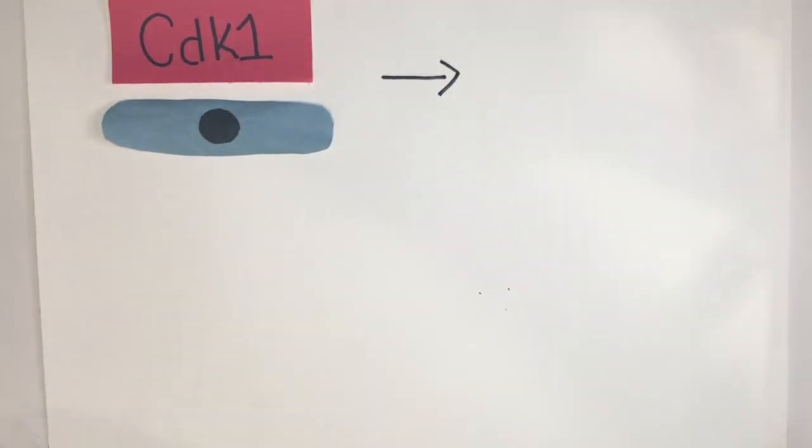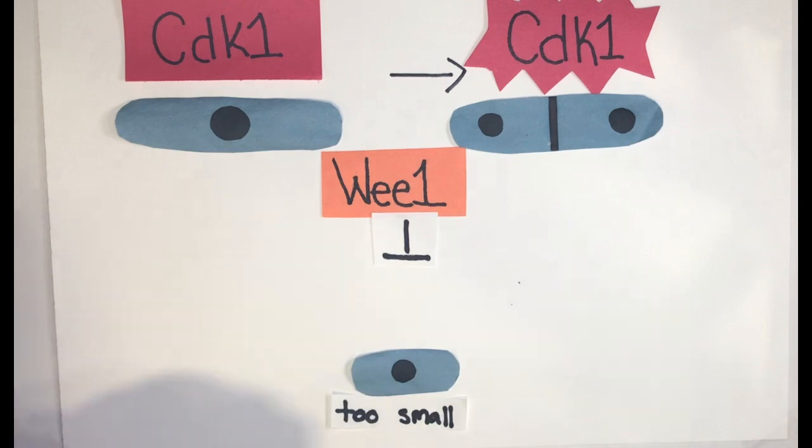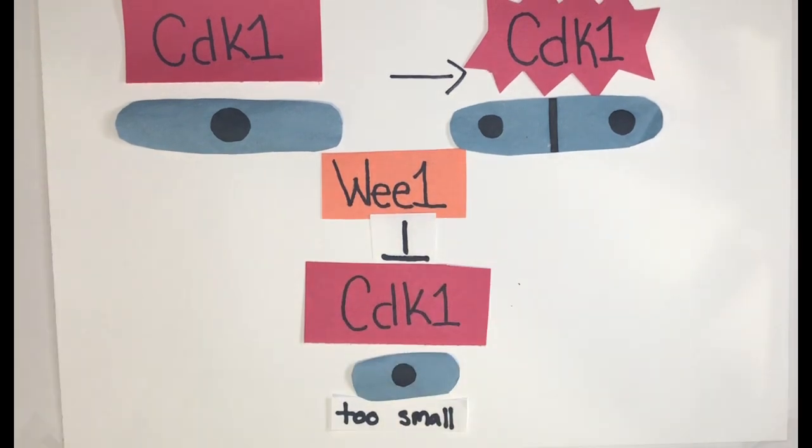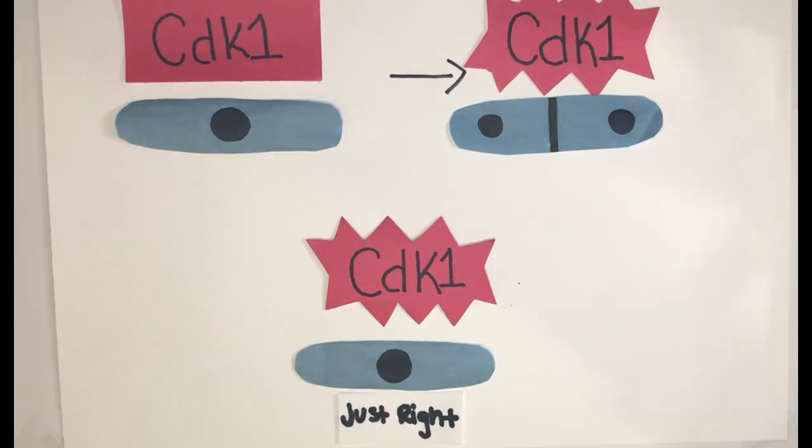The key molecular event that triggers mitotic entry is activation of the cyclin-dependent kinase CDK1. In small cells, CDK1 is inhibited by another protein kinase called Wee1. Upon reaching the proper cell size for division, cells must shut off Wee1 and activate CDK1.